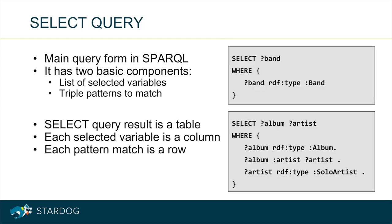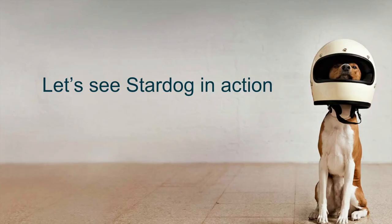The main query form in SPARQL is a SELECT query. SELECT queries, by design, look like SQL queries. We have first the selected variables in the query, and then there is a query body that contains the triple patterns to match. SELECT query results form a table where each selected variable shows up as a column, and each pattern match shows up as a row. All the data and queries we will be using today are available in our GitHub repository.